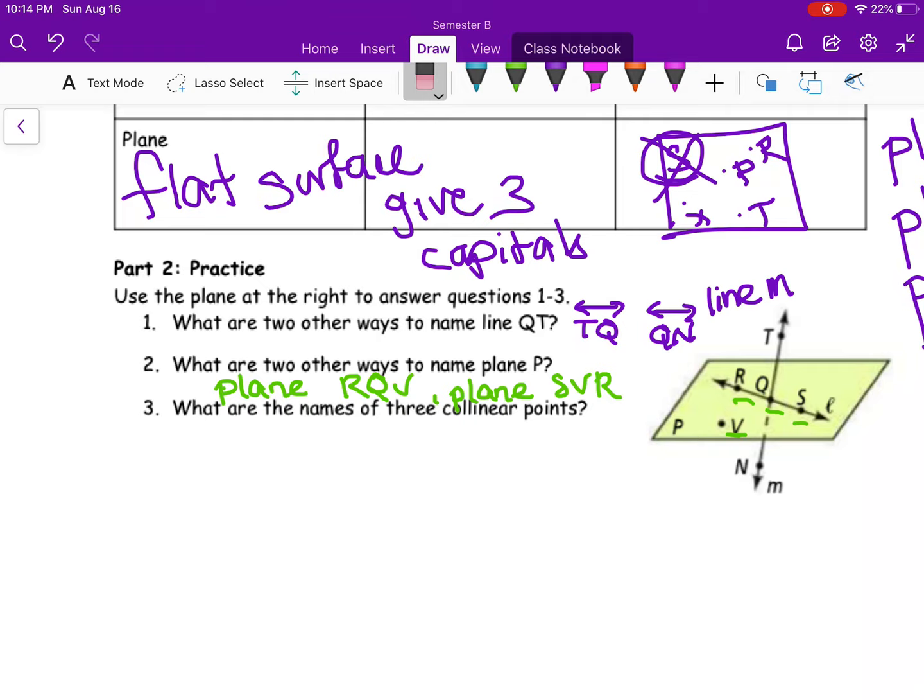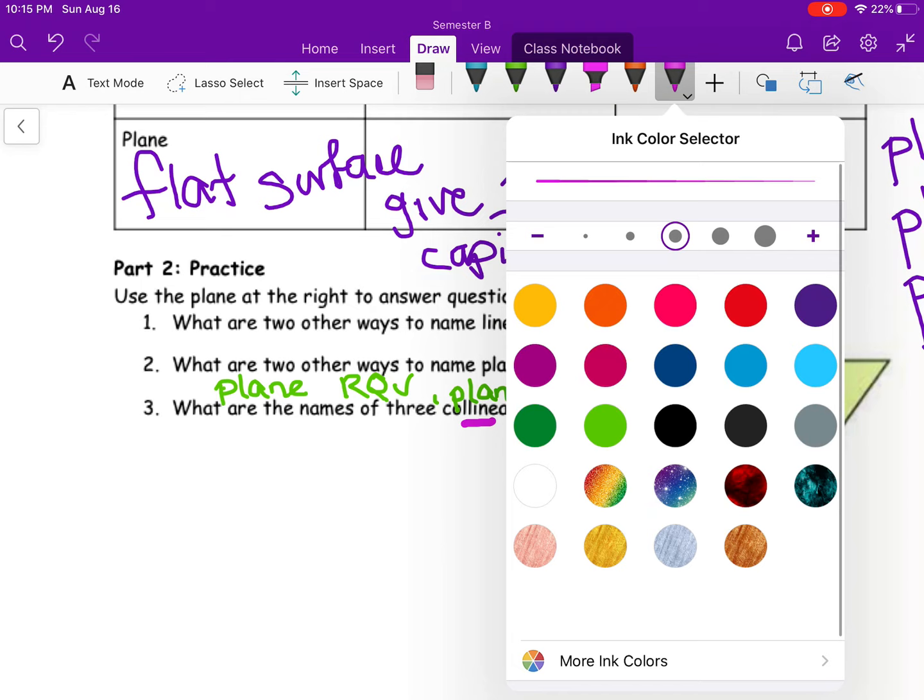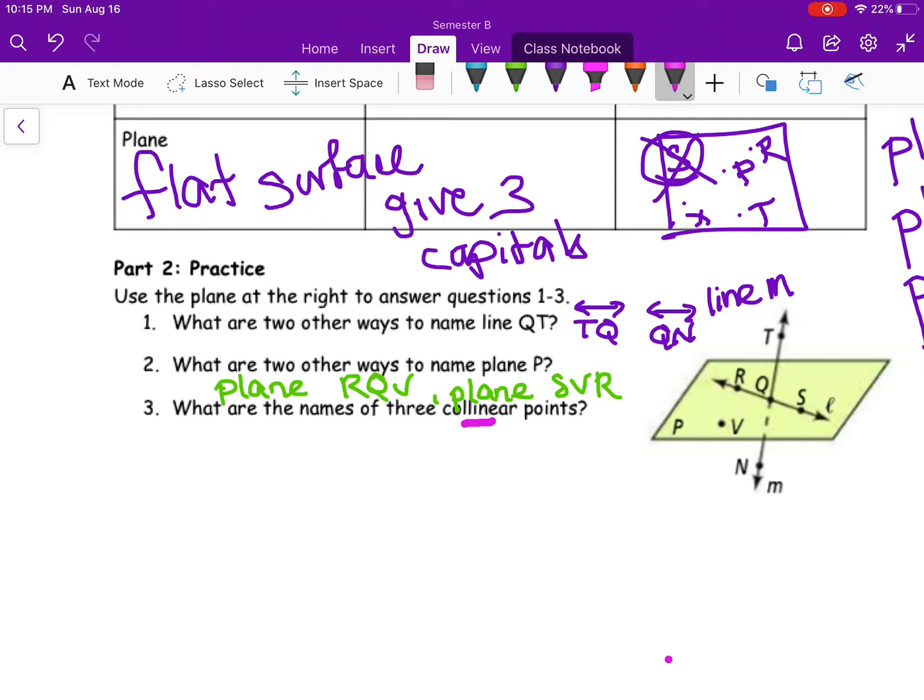And then for number three, it says what are the names of three collinear. So collinear, think of line. So collinear points are points that fall on the same line. So let's just look at line L here. I'm not going to use the L because that names the line. It doesn't have a point with it because there's no dots. So those three points fall on the same line.